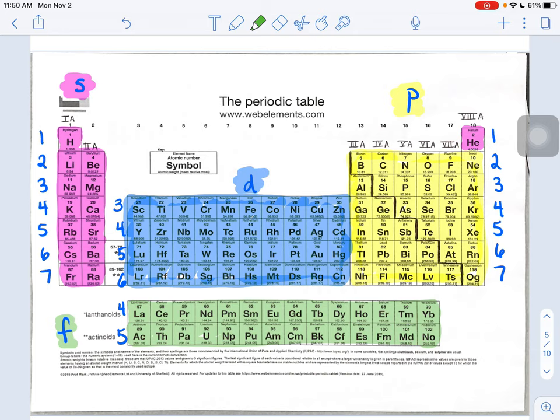Okay. One other thing that I'd like you to label. This far right-hand column that contains helium, neon, argon, krypton, xenon, radon, and what is O-G? Oganessin? Whatever that is. Those guys, I'd like you to label those as noble gases.